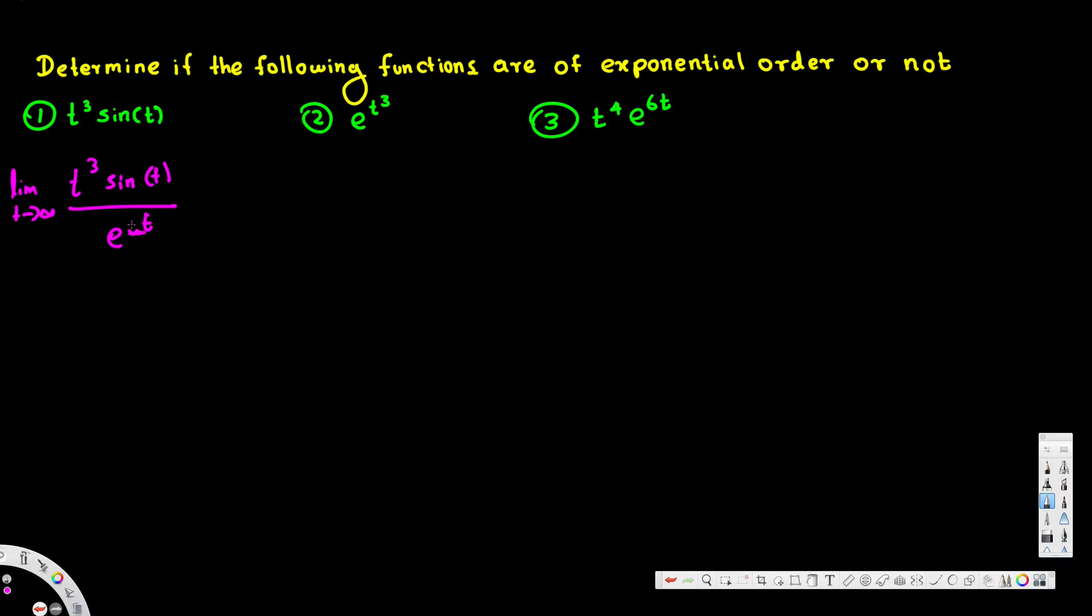If it can make this zero, then the answer is yes; otherwise it's no. Now to find out this one, first we can think about sine t. The maximum of sine t can be one, right?